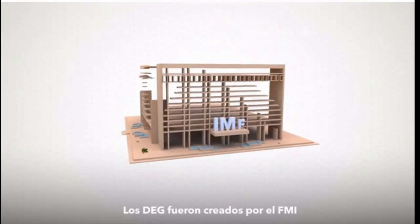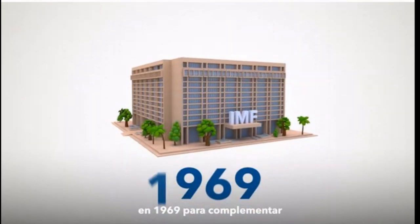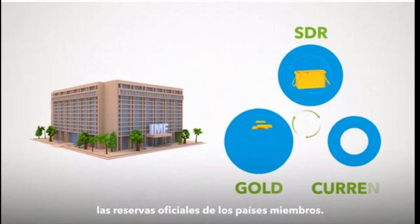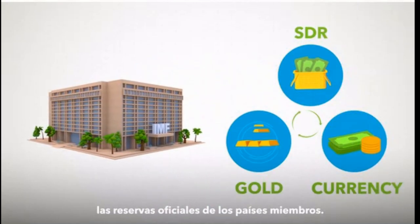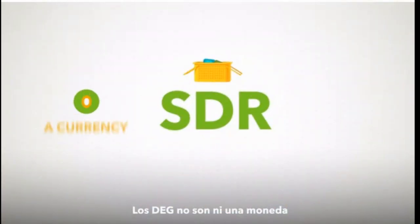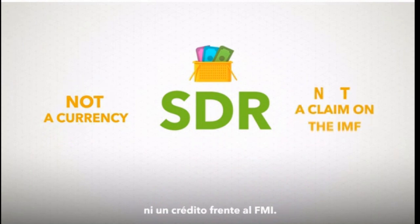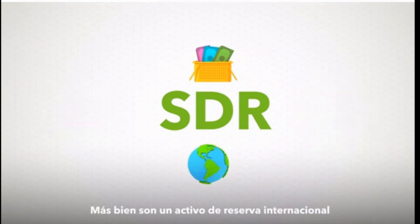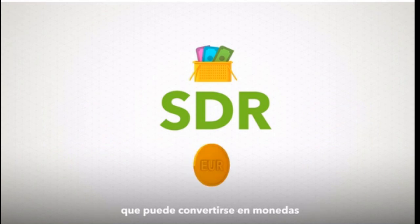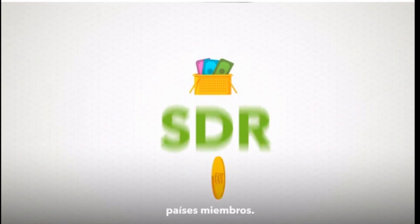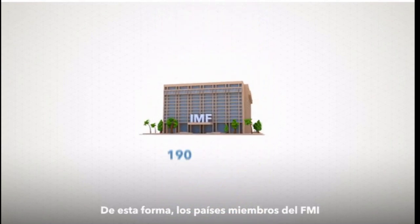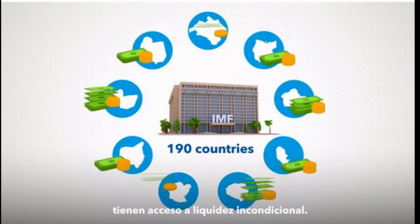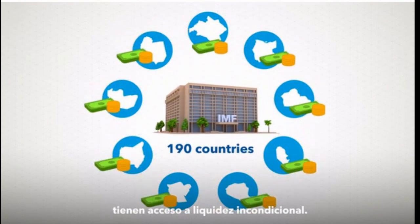SDRs were created by the IMF in 1969 to supplement the official reserves of its member countries. SDRs aren't a currency, and they're not claims on the IMF. But they are an international reserve asset that can be converted into reserve currencies with the help of other member countries. This way, IMF members have access to unconditional liquidity.